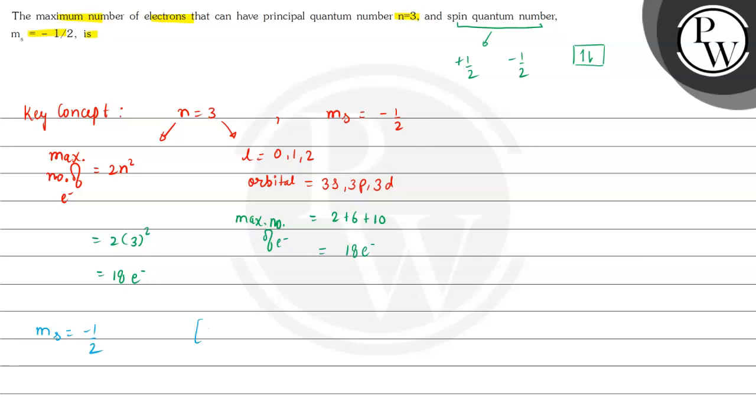in this situation, maximum number of electrons will be equal to 18 electrons divided by 2, that is this will be equal to 9 electrons.